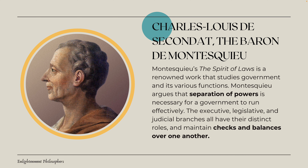Next is the French philosopher Charles Louis de Seconda de Baron de Montesquieu — Montesquieu for short. His renowned work, The Spirit of Laws, is centered around studying government and how it functions. Montesquieu argued that the separation of powers is necessary for a government to run effectively. He described three branches — executive, legislative, and judicial — each with distinct roles and a checks and balances system so no branch has more power than another. This directly influenced our own U.S. government.